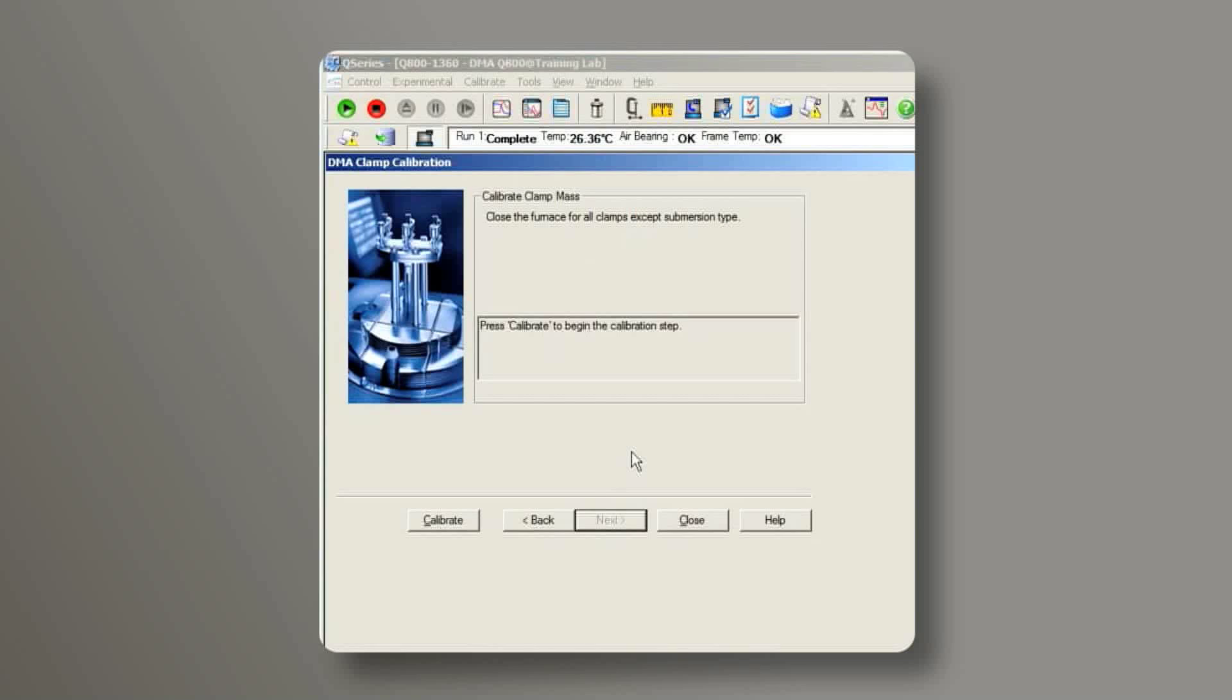Close the furnace from the instrument touch screen, then click on Calibrate. This first calibration step is to calibrate the mass of the movable clamp.